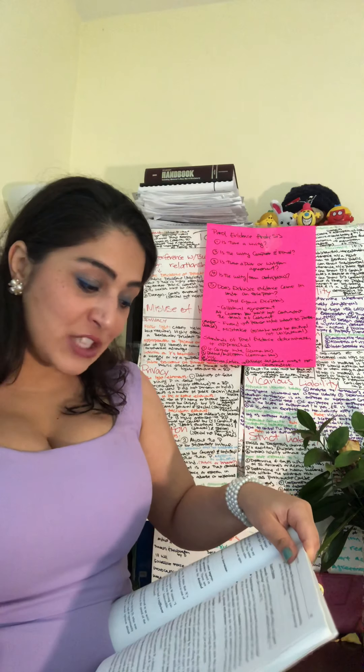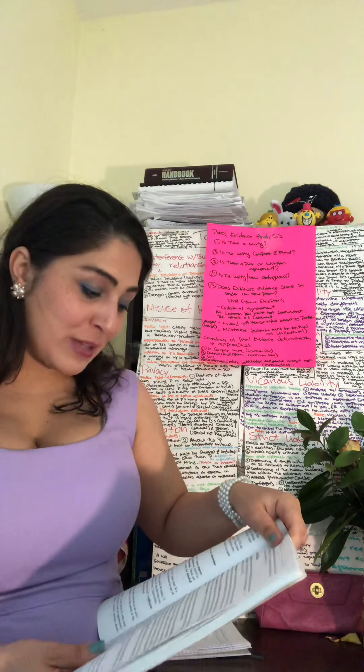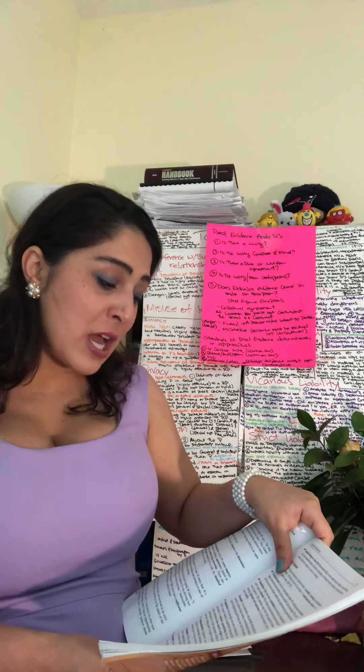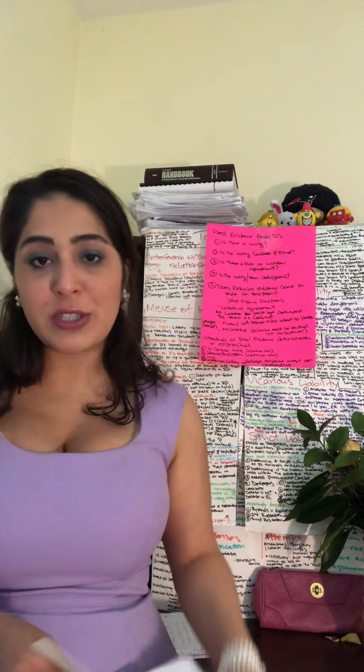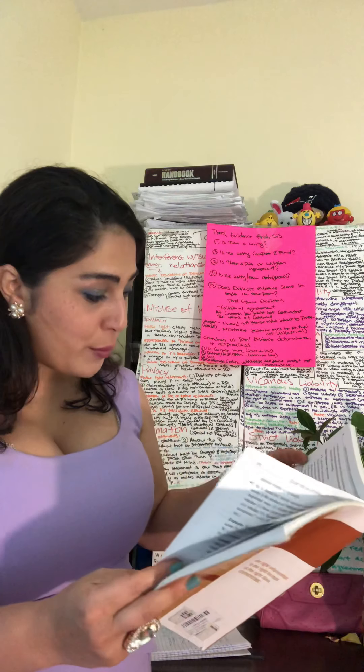For expert opinions: expert testimony is allowed where scientific, technical, or other specialized knowledge will help the trier of fact — either to understand the evidence or to determine a fact in issue. This is FRE 702. Look for technical issues in the fact pattern where the witness is discussing a technical subject, and also look for appropriate expert testimony, because if the expert is inappropriate it won't work.